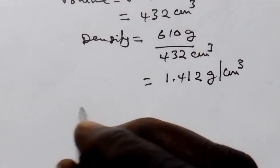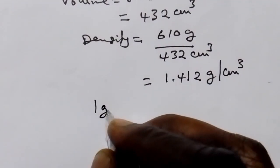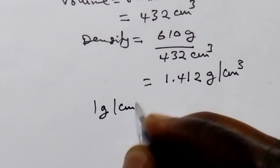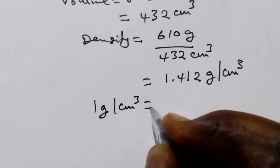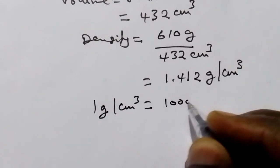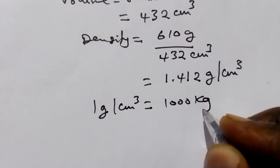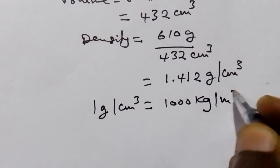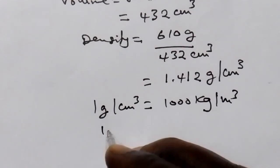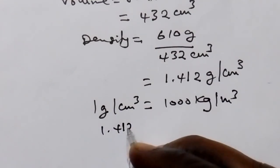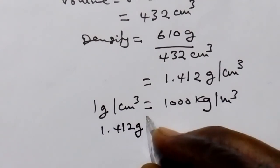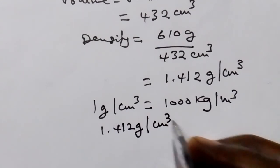And now we know that 1 gram per cubic centimeter is equal to 1000 kilograms per cubic meter. So what about 1.412 grams per cubic centimeter?